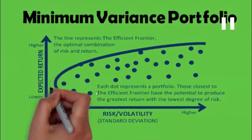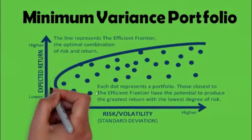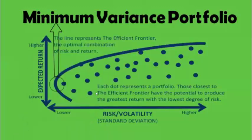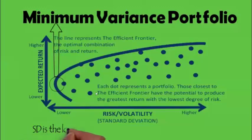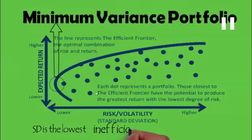In our earlier video we discussed the efficient frontier, which tells us how diversification works. The minimum variance portfolio is the point where the inefficient portfolio ends and the efficient portfolio starts — where the return is at this level and the risk is the minimum.